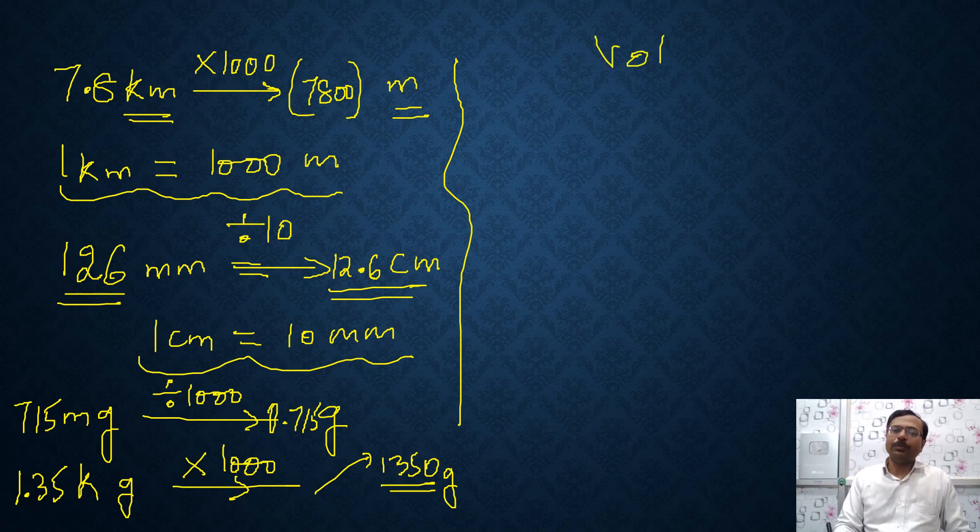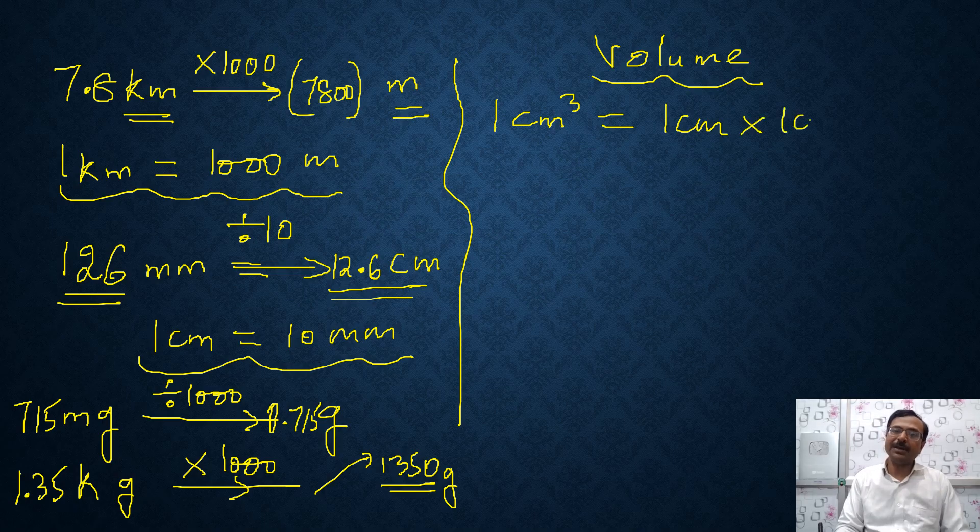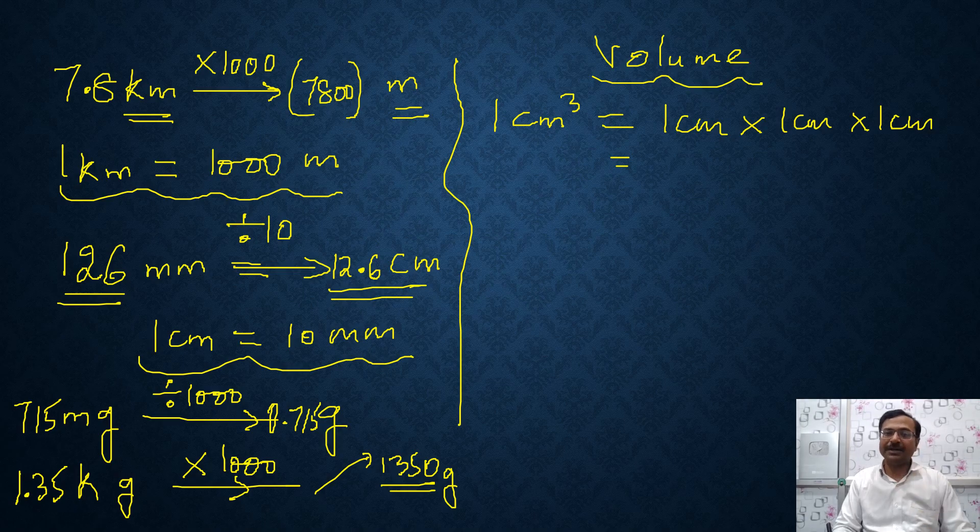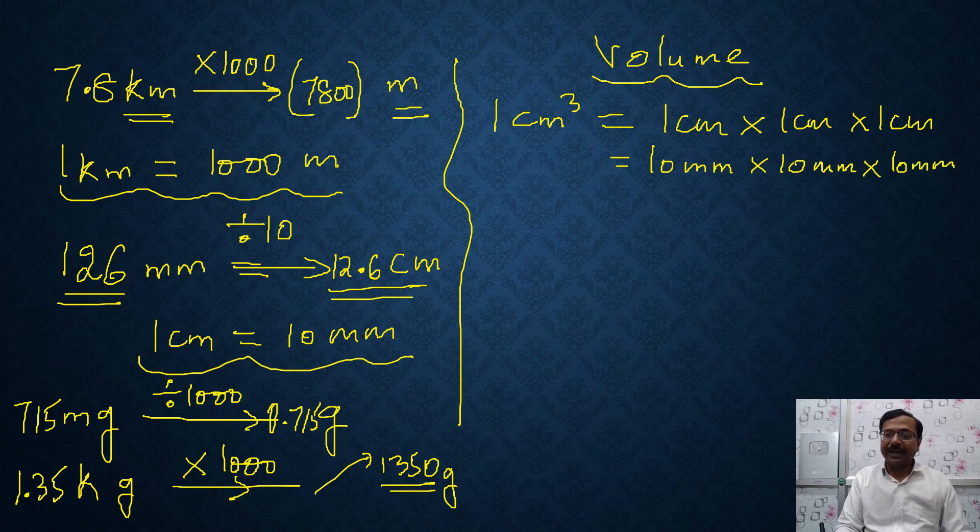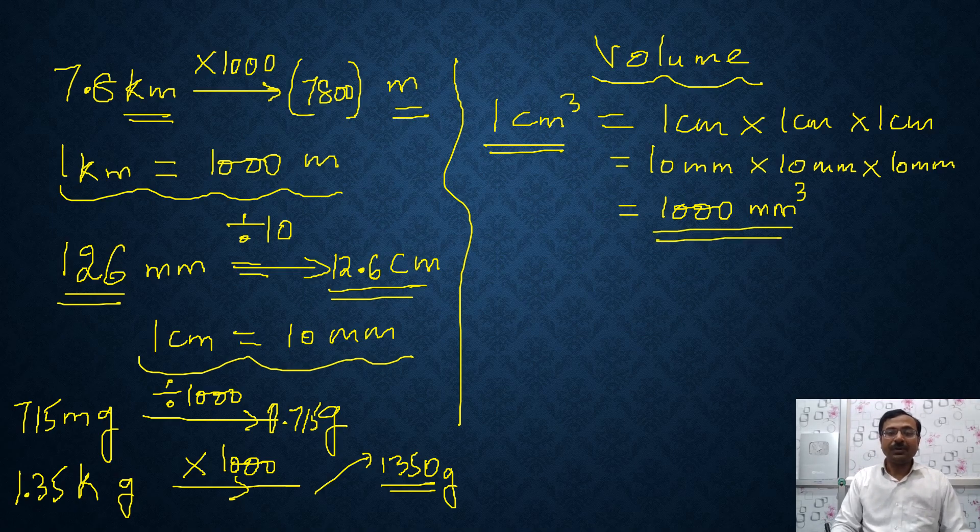If you talk about volume, then volume has some special units just like area also. 1 centimeter cube is actually 1 centimeter times 1 centimeter times 1 centimeter. So if you convert that into millimeters, 1 centimeter has 10 millimeters. So 10 millimeter into 10 millimeter into 10 millimeter, that will give you what? 10 into 10 into 10 is 1000. Millimeter into millimeter into millimeter is millimeter cube. So you can convert like 1 centimeter cube is 1000 millimeter cube.